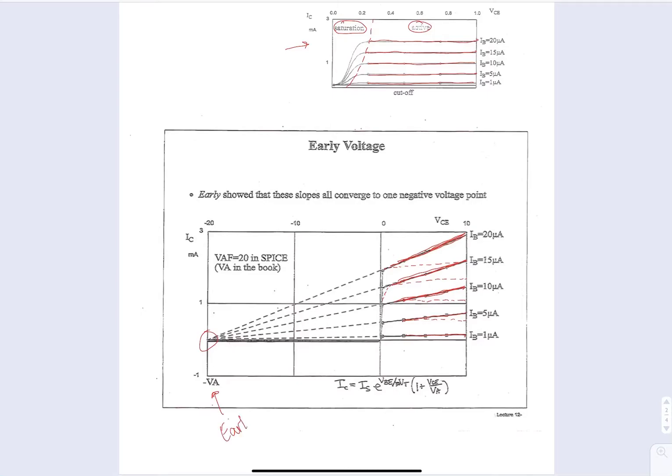So the early voltage is an unwanted effect due to the actual physical properties of the BJT. A common value is 20 volts for this value. And how this affects the current then, instead of being flat during the active region, we have a slope.